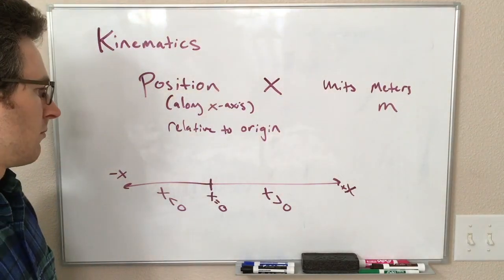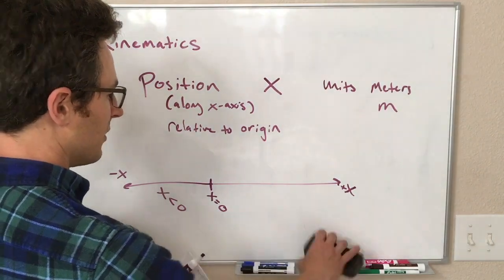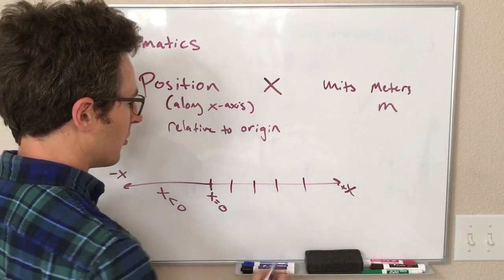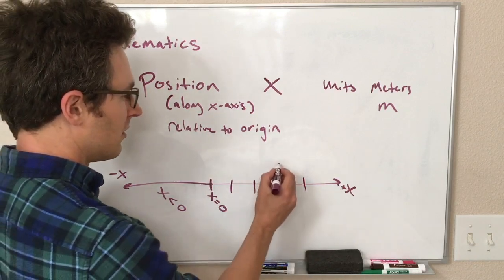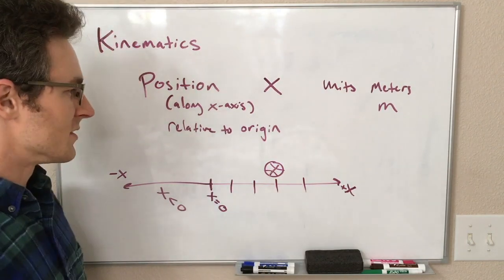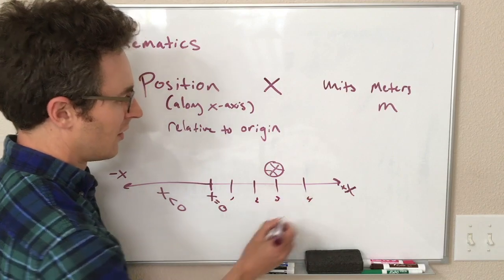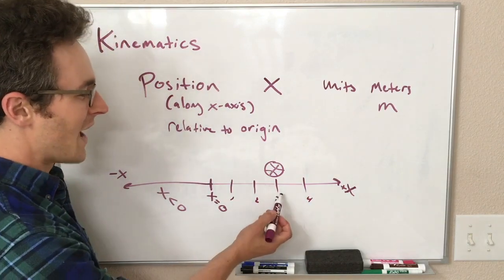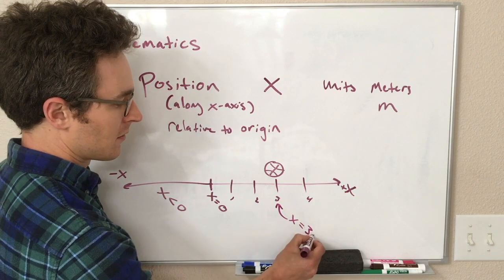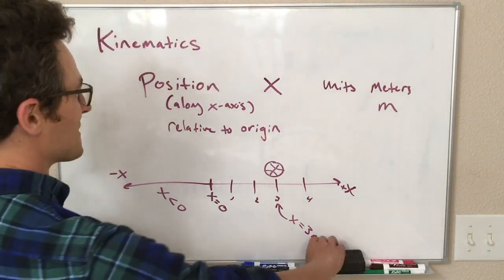All right, that's pretty much it. We could do an example that's really boring, but what the heck. If we have x equals one, two, three, four, and I have a ball that is right here, what is its position? I said this was one, two, three, four, so its position is x equals three meters, right? And that's not exciting, but now you have an example.